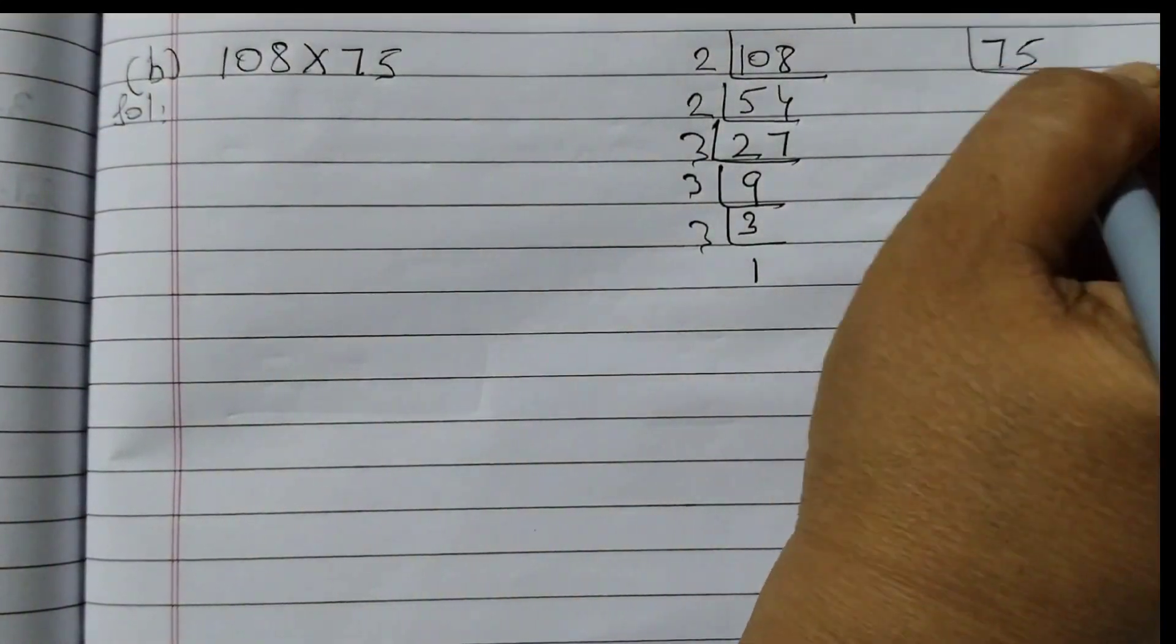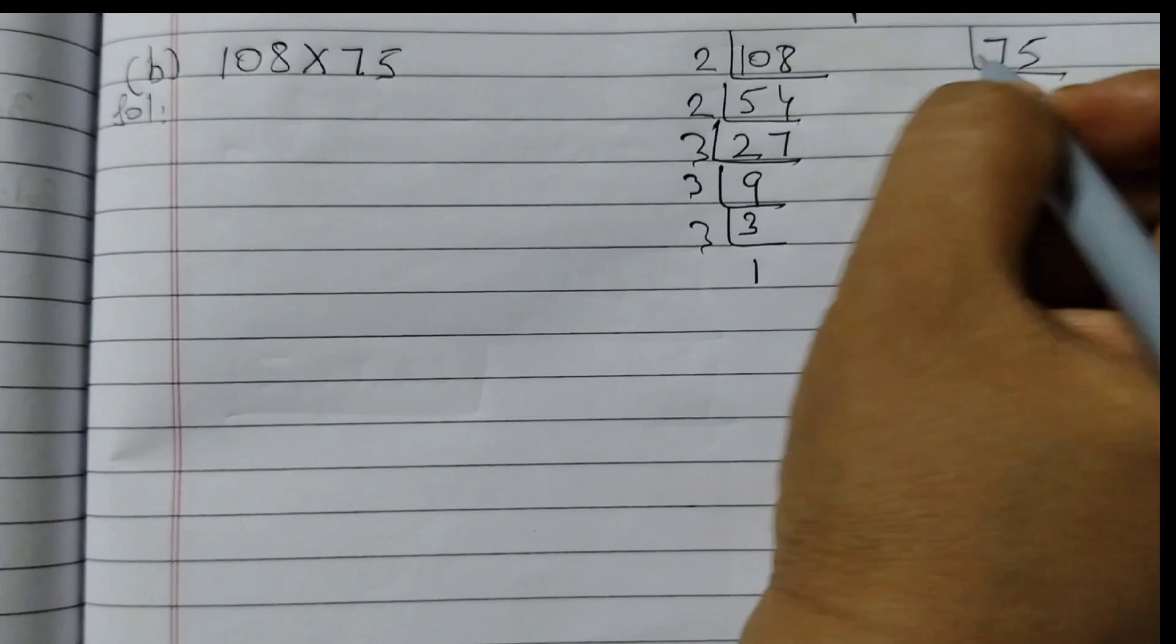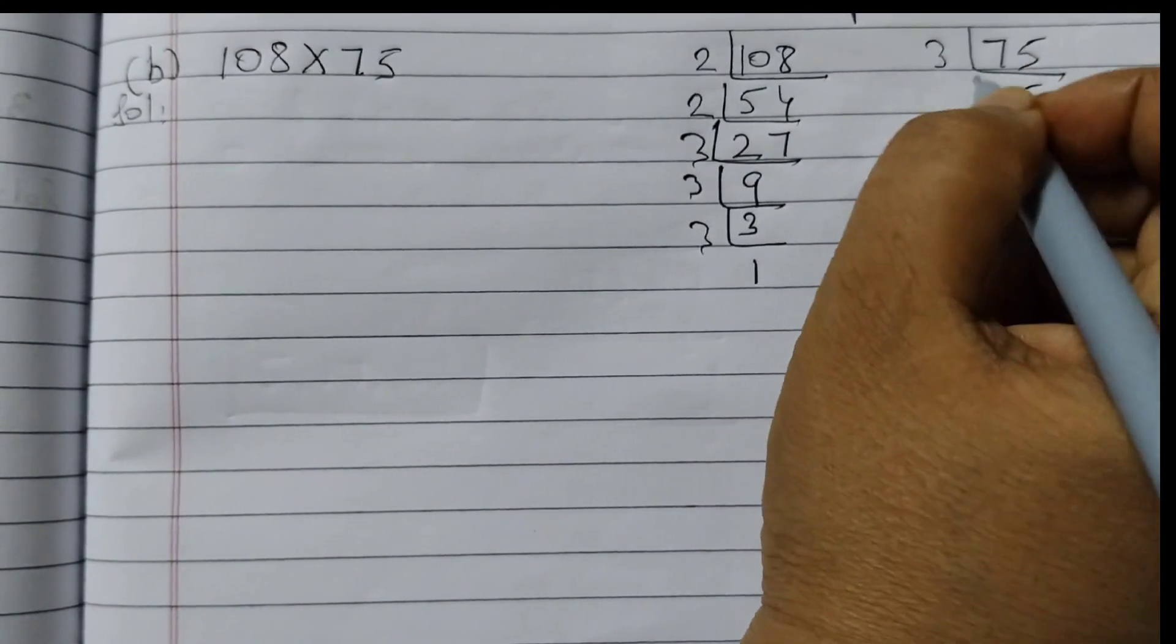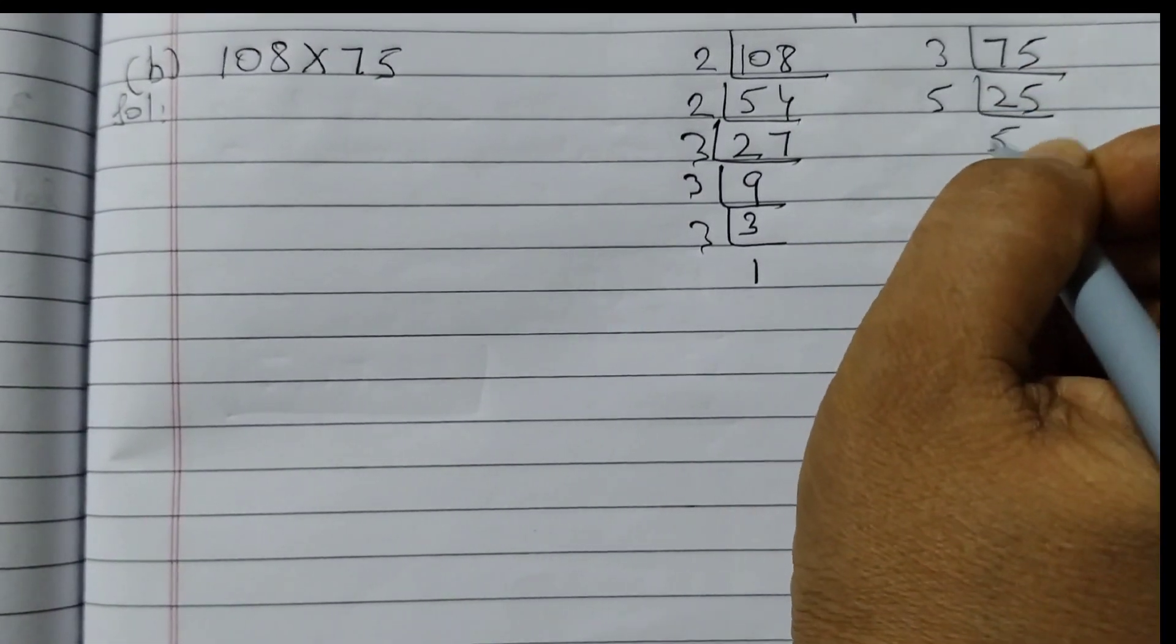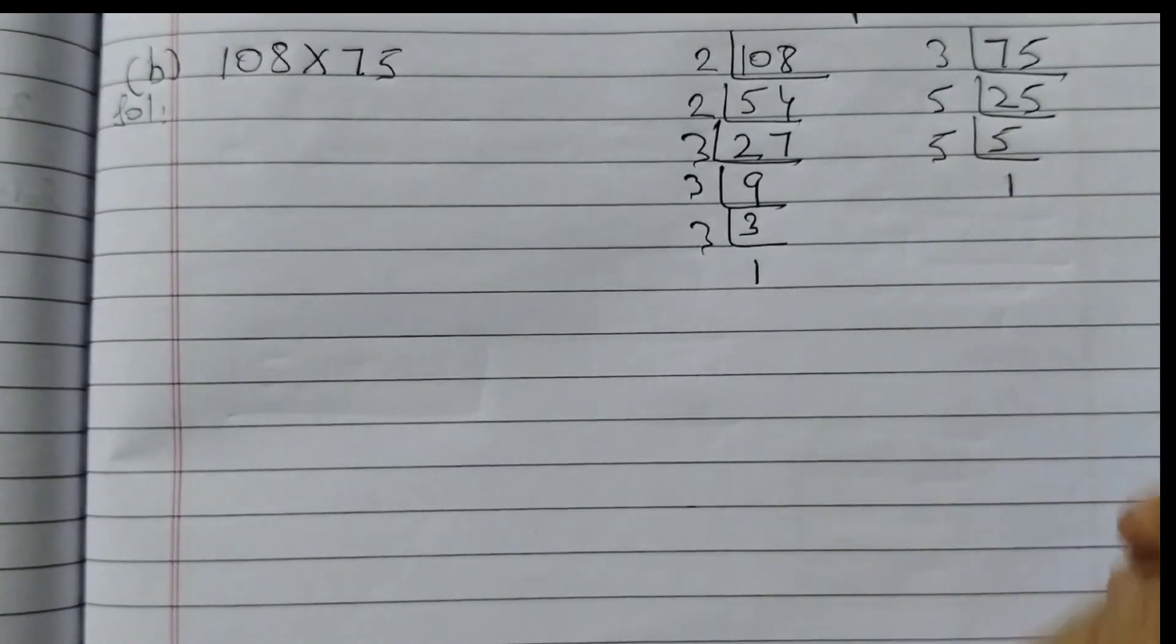Now 75. 75 is also divisible by 3, so 3×2 are 6, 15, 3×5 are 15, 5×5 are 25, 5×1 are 5.